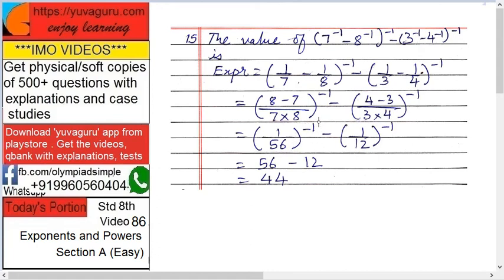Now again reverse this. Convert this minus 1 to plus 1. So it will be 56 above and 12 above in the numerator. So it will be 56 minus 12.